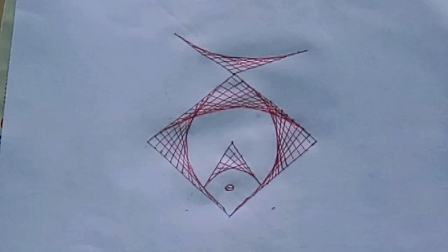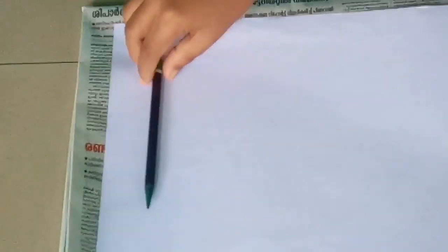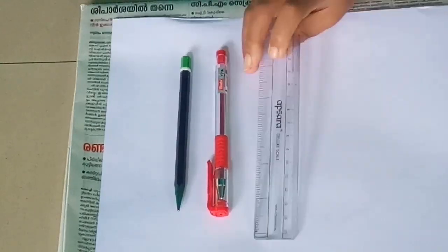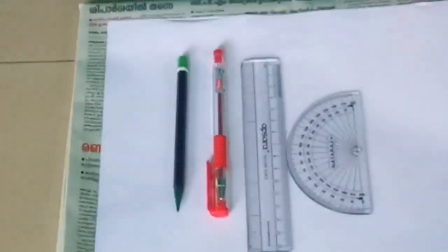The materials required are pencil, reading pen, scale, protractor, and eraser.